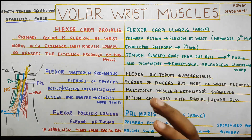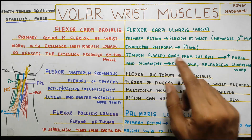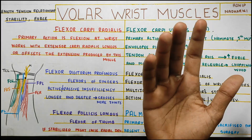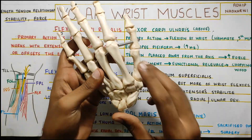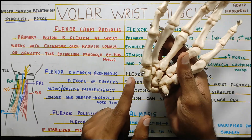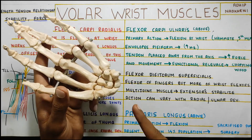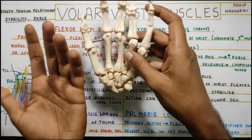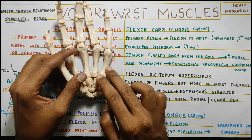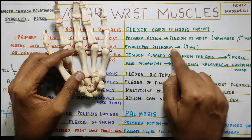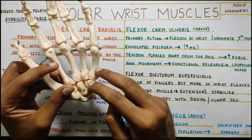Next muscle is flexor carpi ulnaris. This is on the ulnar side of your wrist joint, and the primary action is also flexion at the wrist joint. It attaches to the hamate and the fifth MCP. Looking at the bones — here is your thumb, scaphoid, pisiform, and hamate. It comes from the ulnar side, attaches to your hamate and your fifth metacarpal, and it also envelopes your pisiform. So it goes over the pisiform and attaches to two bones.